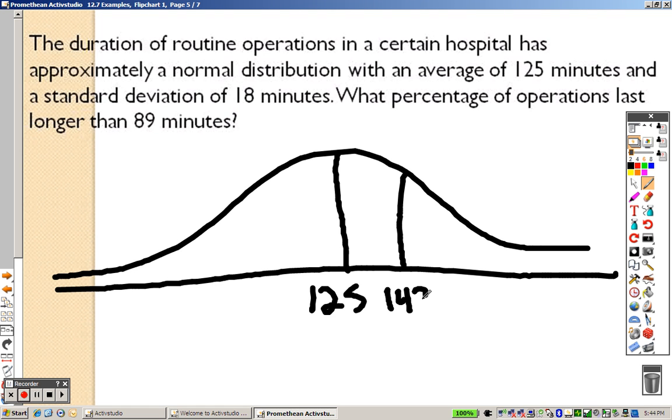So, I get 143 plus 18 again is 161, and plus 18 again is 179. And, then, going down, 125 minus 18 is 107, and minus 18 is 89, and then minus 18 again is 71.